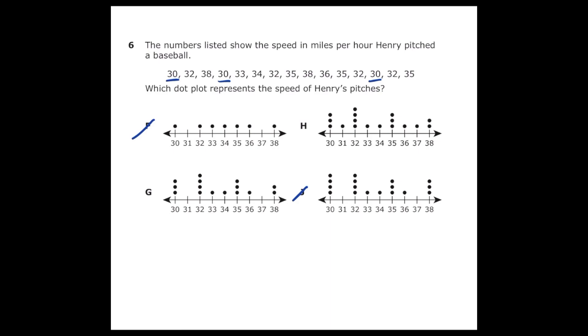Next up, I'm going to see if we have a 31 anywhere in our list, and I don't see one, but letter H does have a dot on 31, so we can cross out letter H, so letter G has to be our correct answer.